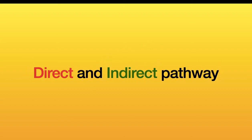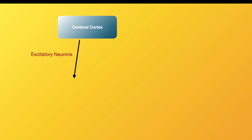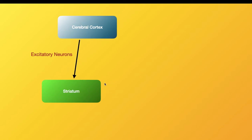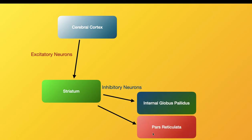Now I want to talk about the direct and indirect pathway — the connection between the basal ganglia and other parts. Say you wanted to move your leg. The cerebral cortex, essentially saying 'I want to move the leg,' will send an excitatory signal to the basal ganglia — more specifically, the striatum. The striatum, since it's important for motion control, will receive this signal and send it to the internal globus pallidus and pars reticulata.